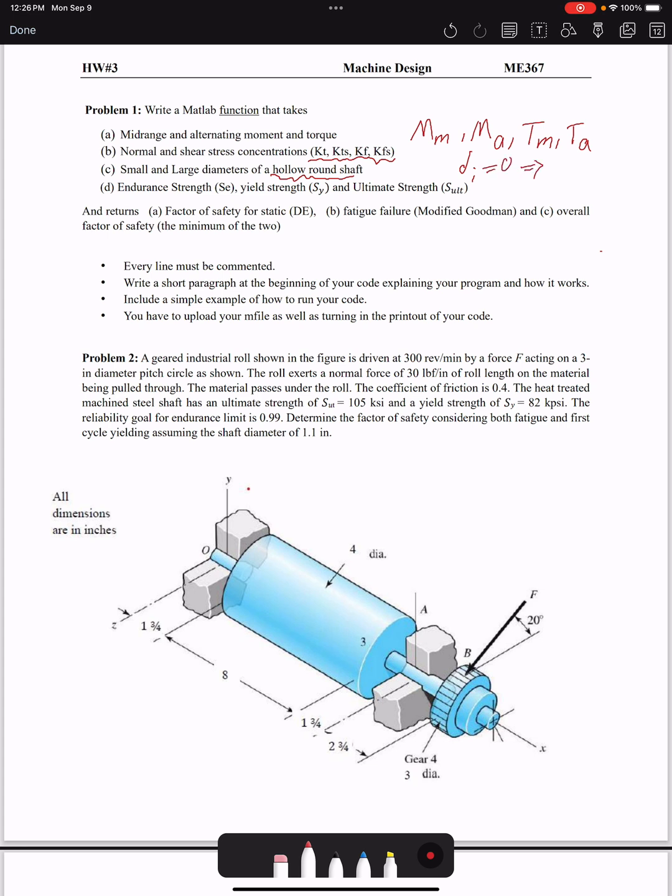Then we have three strengths: endurance strength, yield strength, and ultimate strength would be our inputs. We are going to find factor of safety for static.